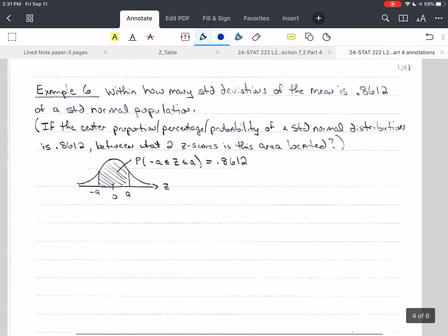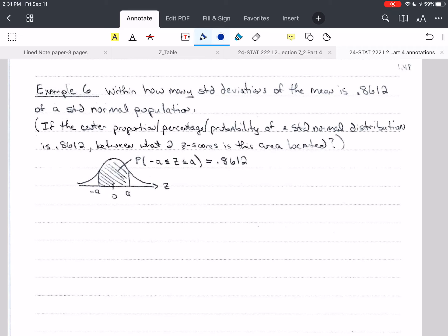We're going to start with the sixth example here, and we can ask this question a couple of different ways. Within how many standard deviations of the mean is 0.8612 of a standard normal population? We could have said 86.12% of a standard normal population, and so we're looking for a z-score, and we would just give one value in this case because we're asking standard deviations, and those are always positive.